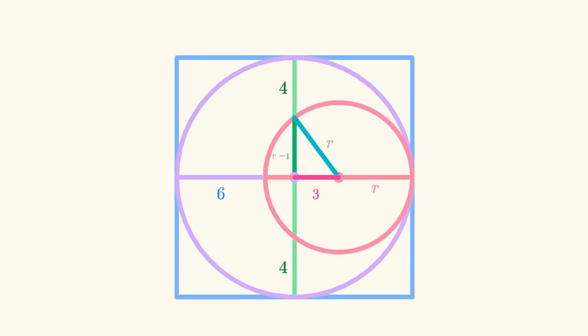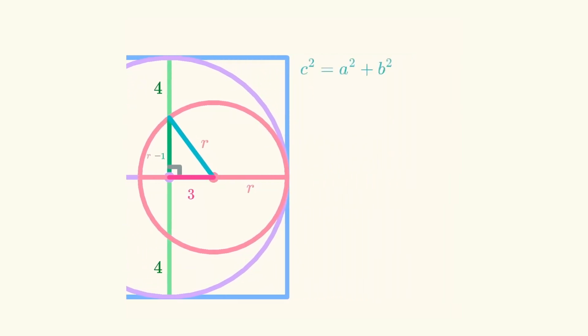Notice we can draw another radius that creates this right triangle. If we plug these values into the Pythagorean theorem and do some simplification, we'll find that r equals 5.